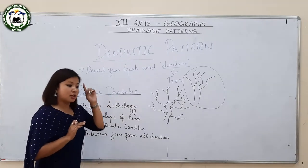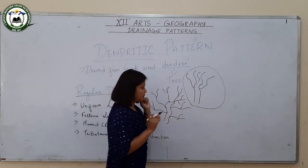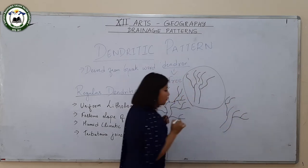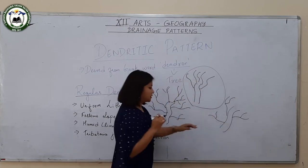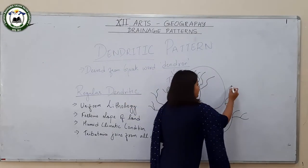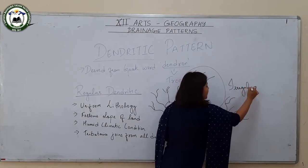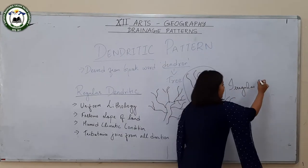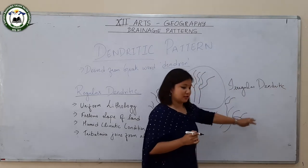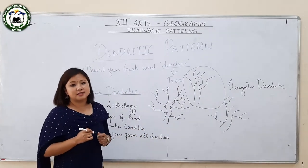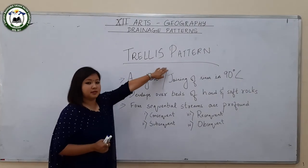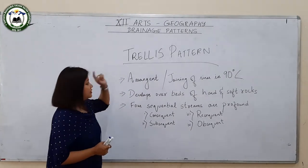The irregular dendritic pattern is similar to the regular dendritic pattern, but the only difference is that it has fewer tributaries. This is because it is mostly found in arid conditions — places which experience less rainfall. It is regarded as irregular dendritic pattern and is mostly found in the Thar Desert area of India.